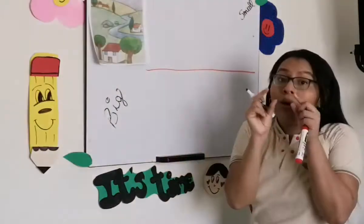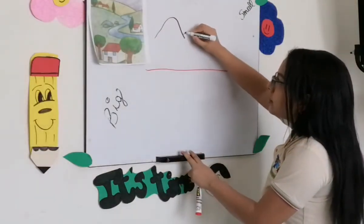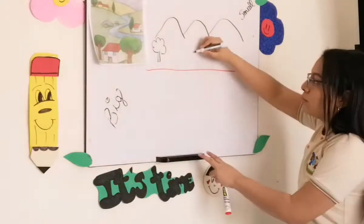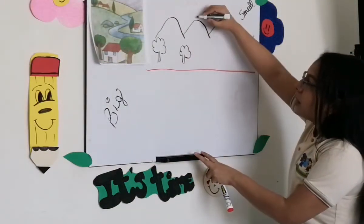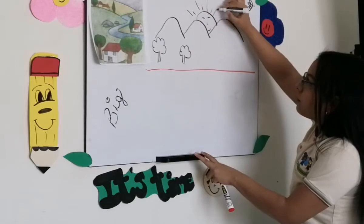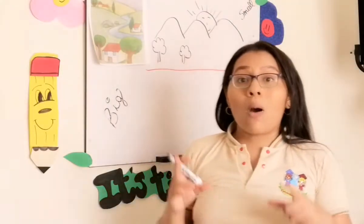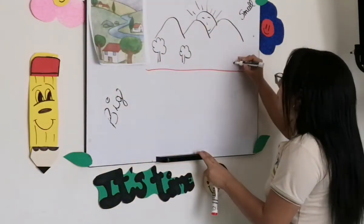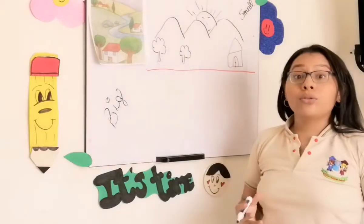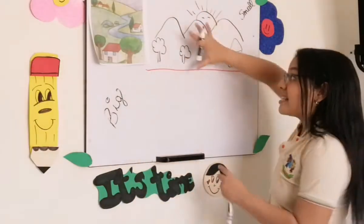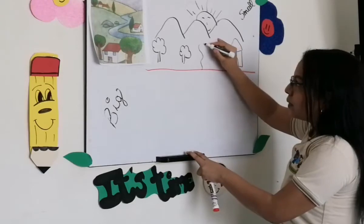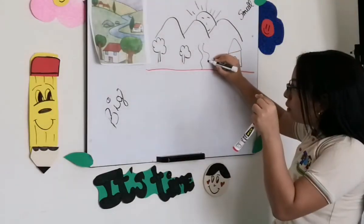Now pay attention. The mountain — we are going to draw it small. Very good, small mountains. We are going to draw small trees. Small trees. And we are going to draw a small house, okay? Small house. And now we are going to draw a river. But the river in this section needs to be small. En esta sección necesita ser un río pequeñito — small to big, okay?